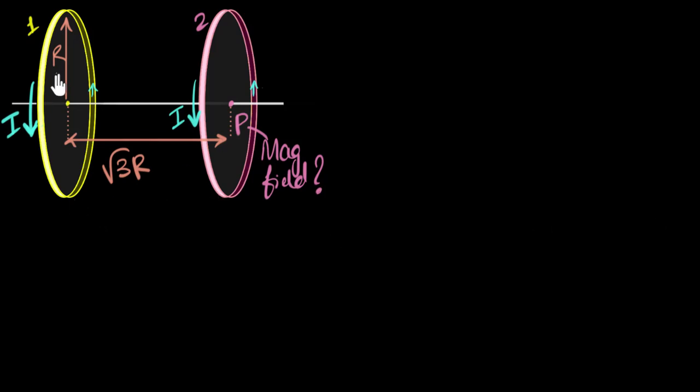We have two coils of the same radius R, carrying a current I in the same direction, kept coaxially apart at a distance of root three R. Our goal is to figure out what the magnetic field strength is going to be at this point P, at the center of coil two. I remember there is a formula that we derived for calculating the magnetic field due to a current carrying coil. We can just use that.